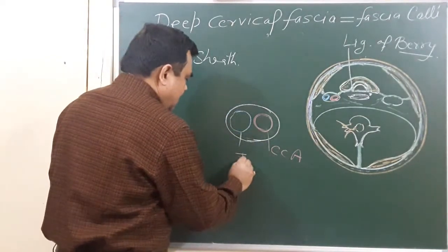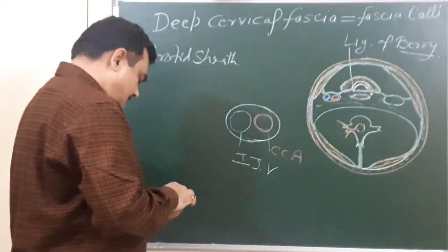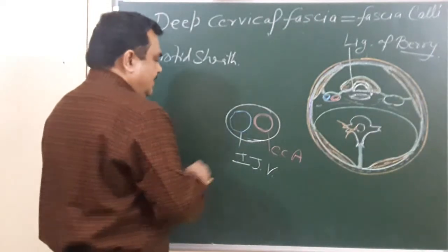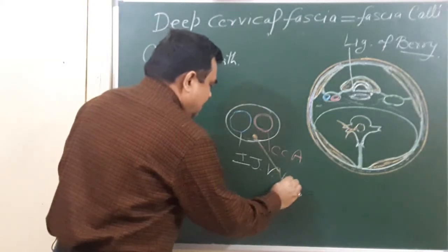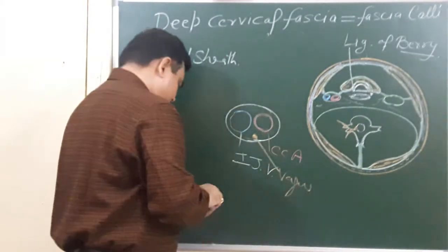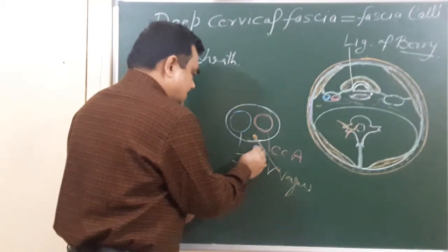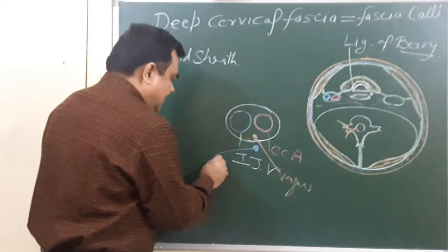And here is a nerve that lies between these two—this is the vagus nerve. And the nerve that lies here is the sympathetic chain.